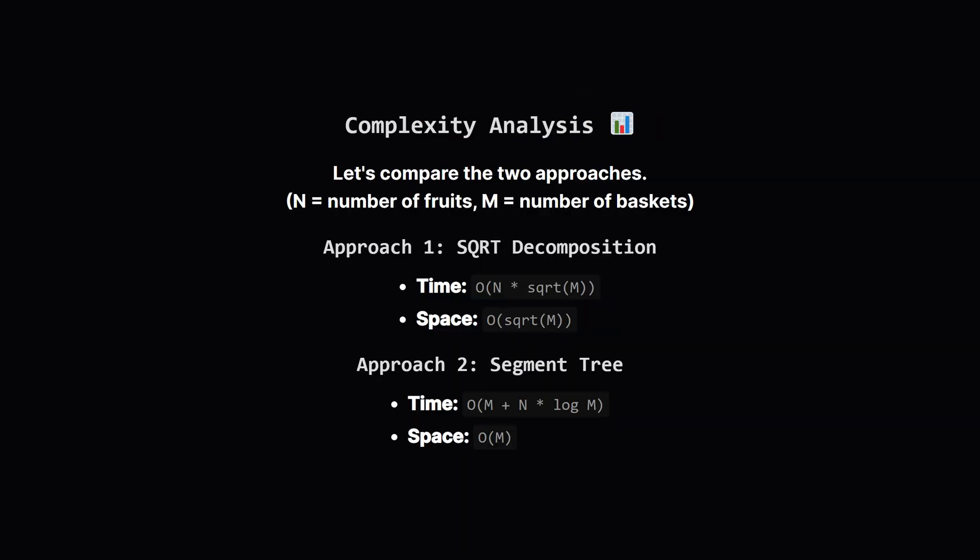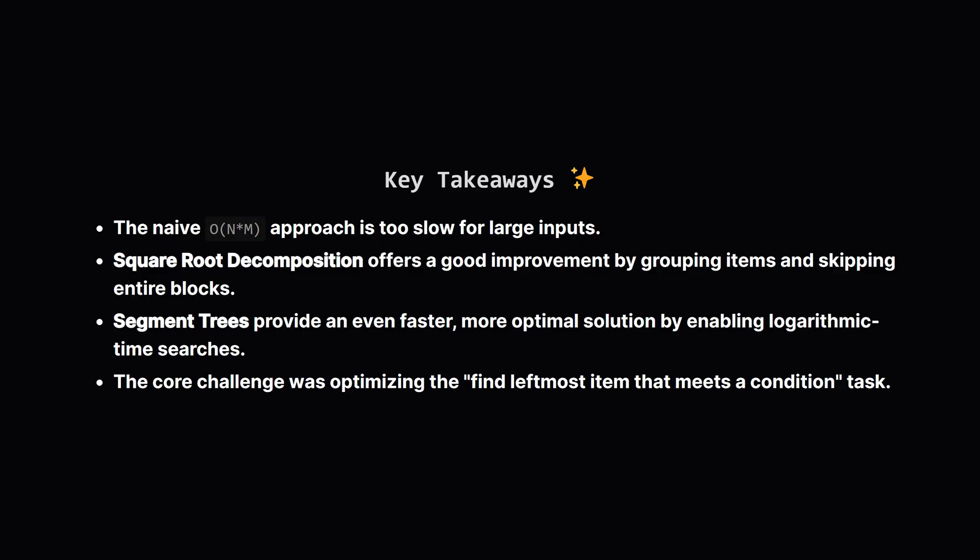How do these two methods stack up? The square root decomposition approach has a time complexity of roughly O(n × √m) — much better than the naive solution. The segment tree is even faster: building the tree takes O(m) time, and each of the n fruits takes only O(log m) time to process, giving a total of O(m + n log m). The segment tree needs more memory to store the tree itself. To recap: brute force is too slow; square root decomposition groups data to let us skip big chunks of work; and the segment tree gives us an even faster logarithmic time search. Both solutions are about efficiently answering that one repeated question: what's the first available spot that's big enough?